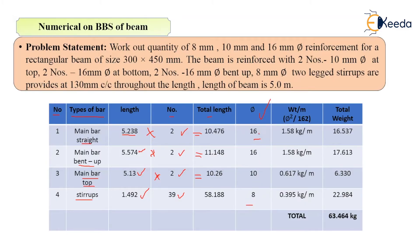The diameter column is included to calculate the weight of bar in kg per meter. The formula for unit weight of bar is φ² divided by 162, where φ is the diameter in mm. For 16 mm bar: 16² ÷ 162 = 1.58 kg/m. Similarly for 10 mm and 8 mm diameter bars using the same formula.